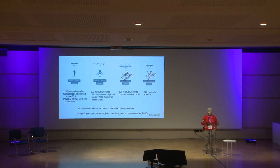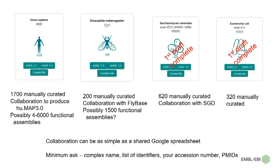We've actually got data on 28 species; I'm just going to concentrate on four as examples. Obviously human is the organism most people are interested in, so we're slowly working our way through the human complexome — to use yet another buzzword. The release we're currently working on will have 1,700 manually curated complexes going public.